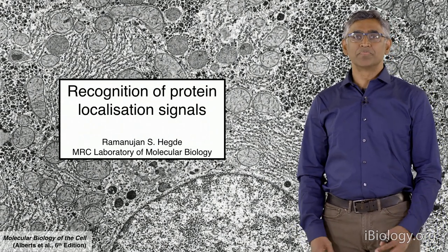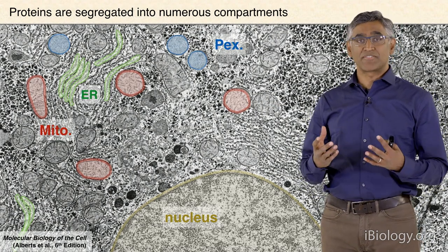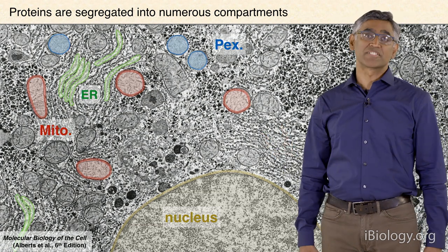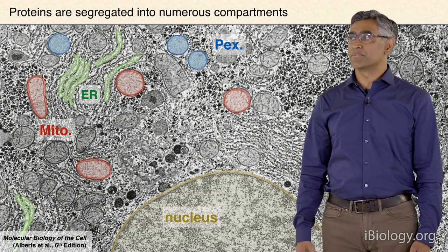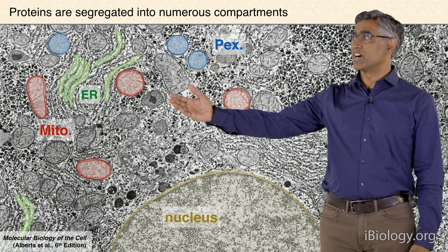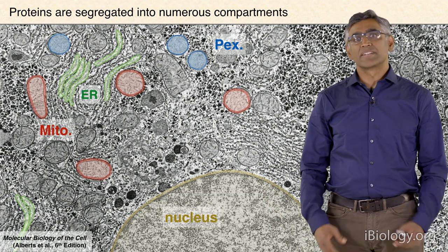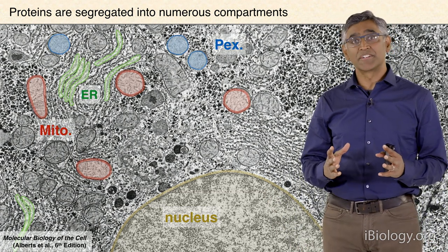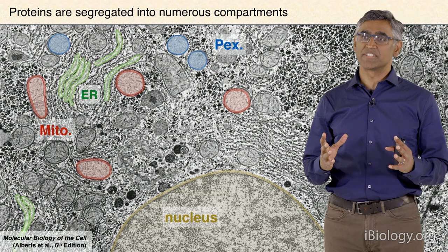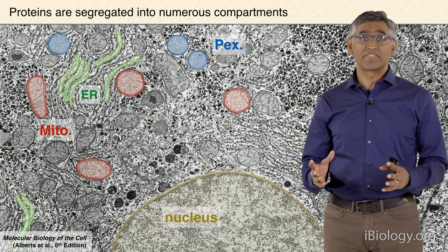To remind you, most of the proteins inside the cell, shortly after they're synthesized, have to be segregated among one of several different organelles. That can range from the endoplasmic reticulum, mitochondria, peroxisomes, nucleus, and so forth. A major problem has been to understand the mechanisms by which you can get all of these different proteins sorted into the right compartment with high fidelity.